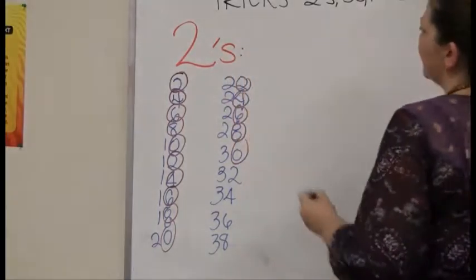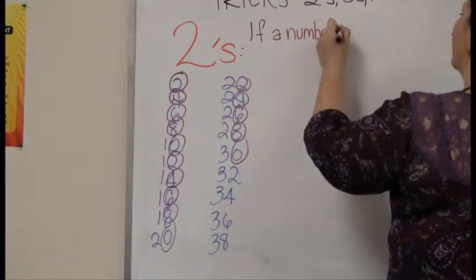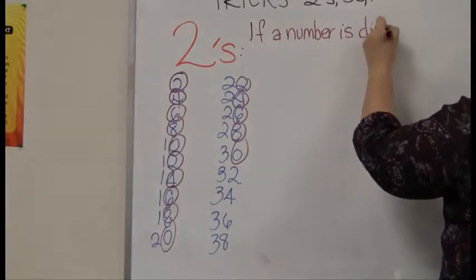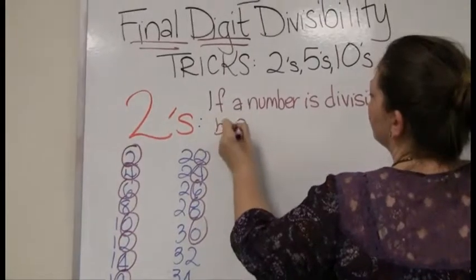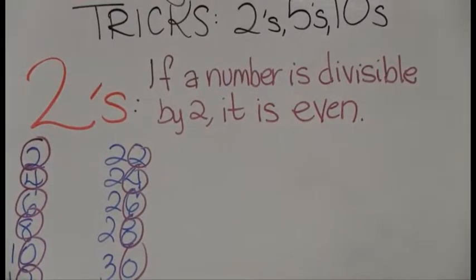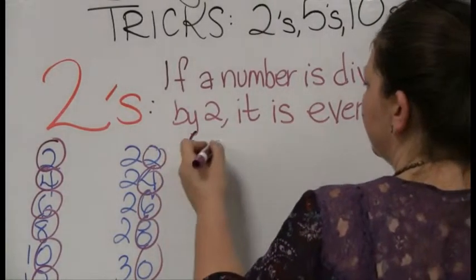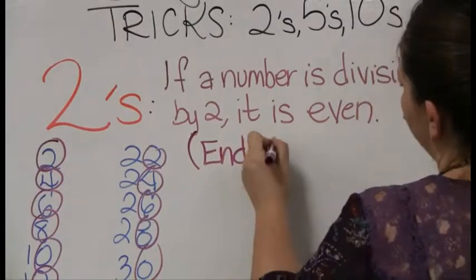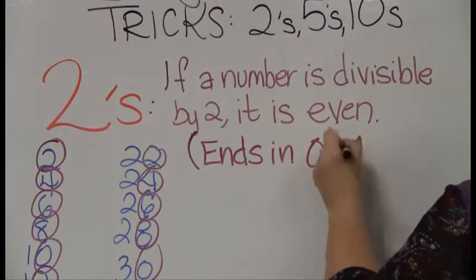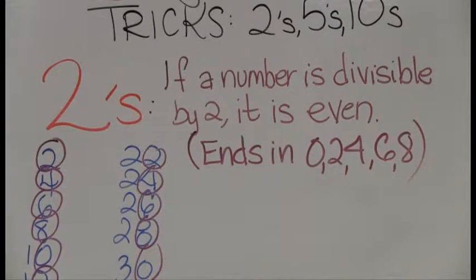What we learn is that if a number is divisible by 2, it is even. Or flipping it around: if a number is even, it is divisible by 2 — same thing. And if we forget what an even number means, it ends in 0, 2, 4, 6, or 8. This is a pretty easy and obvious trick that a lot of people notice without necessarily realizing what they're noticing.